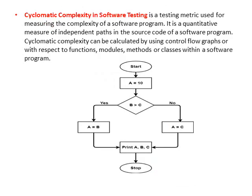Cyclomatic testing in software testing is used for measuring the complexity of a software program. It is a quantitative measure of the independent paths in the source code. Cyclomatic complexity can be calculated using control flow graphs, or with respect to functions, modules, methods, or classes within a software program. This example shows how to make the calculation, and as branching statements increase, the complexity may change.